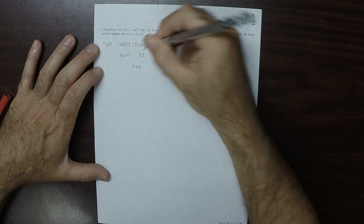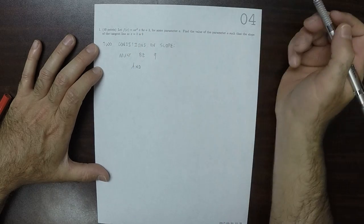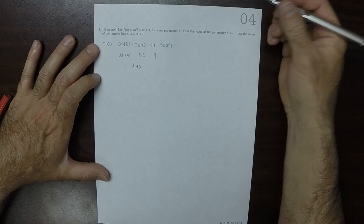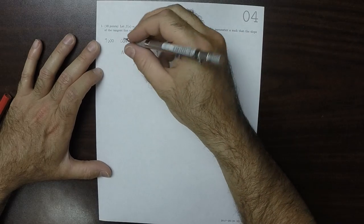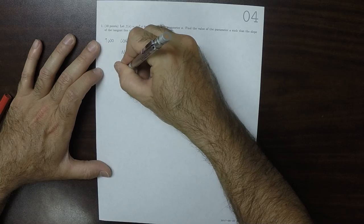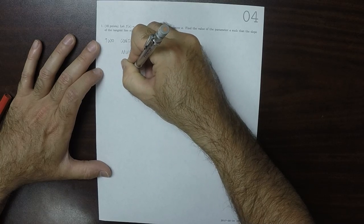Furthermore, we know it's 9 because it's given. On the other hand, because of differential calculus, we know it has to be the derivative of f evaluated at 2.